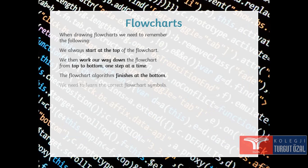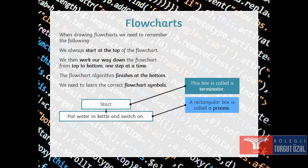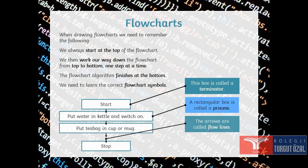When drawing flow charts, we need to remember the following. We always start at the top of the flow chart. We then work our way down the flow charts from the top to bottom one step at a time. The flow chart algorithm finishes at the bottom. So, we need to learn the correct flow chart symbols.